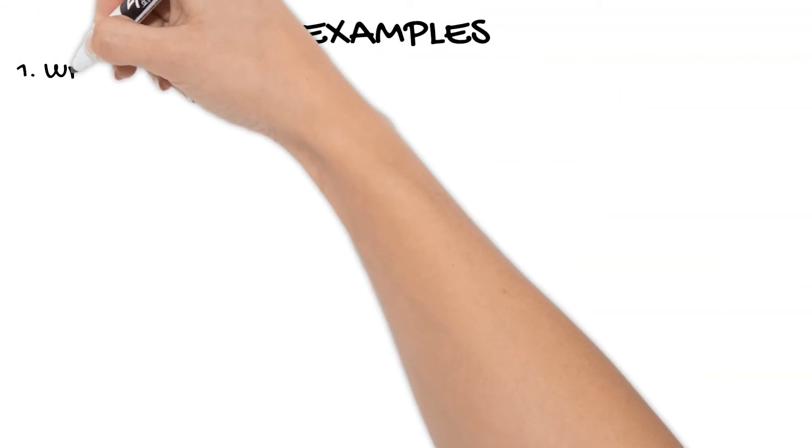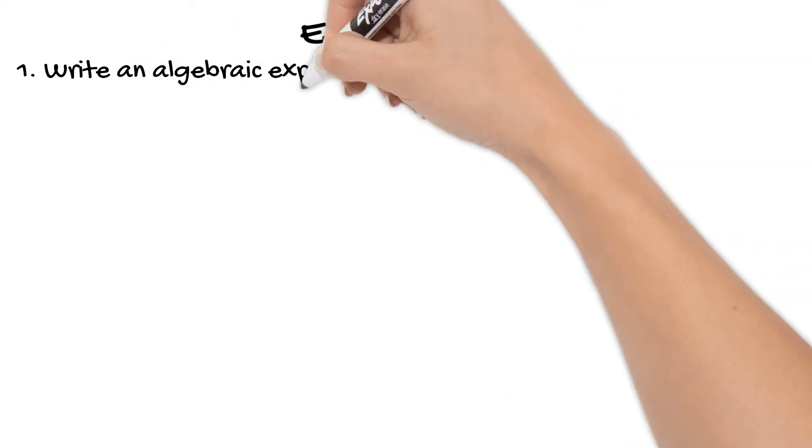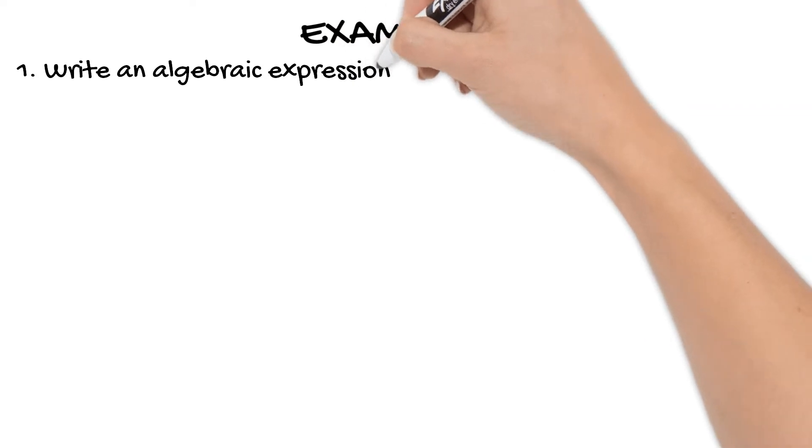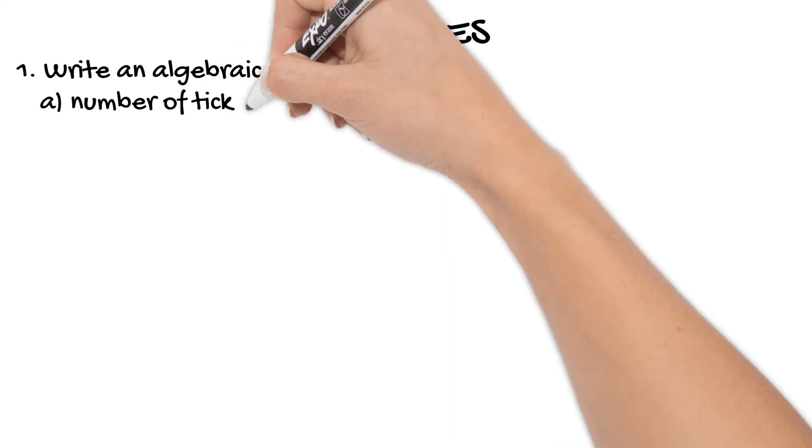So we'll get straight into it. We've been asked to write an algebraic expression for the number of tickets needed for three boys and r girls. Obviously the tickets in total you would need to add those together. So you've got 3 plus r.